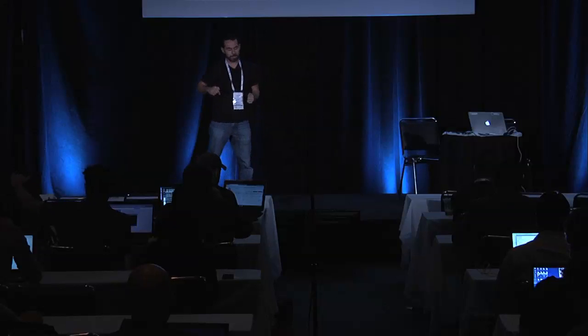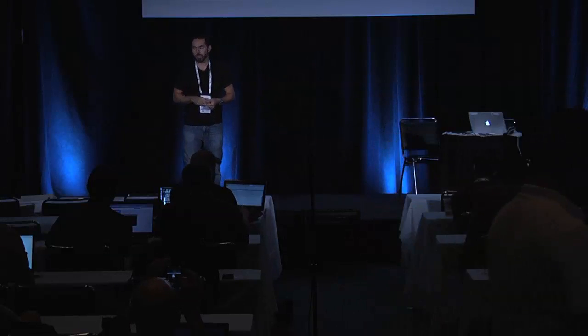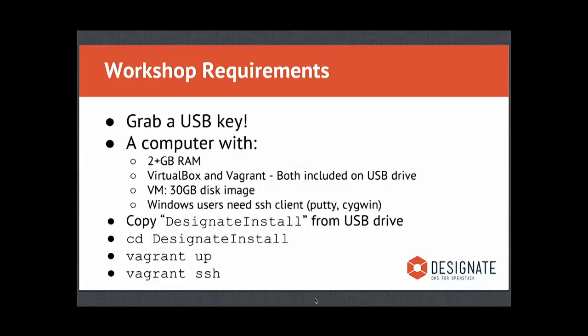The stuff you need to get from the USB drive is all up here. Copy the designate install directory somewhere local where you can get to it easily. Then switch to your terminal, change directory into that folder — so designate install — and once you're there, issue a Vagrant up. That's going to take a little while, depending on your CPU and laptop. Once it's finished, from within that same directory, issue a Vagrant SSH.